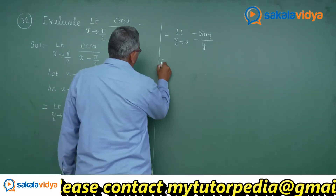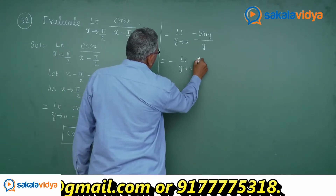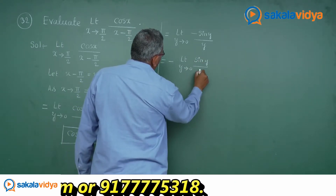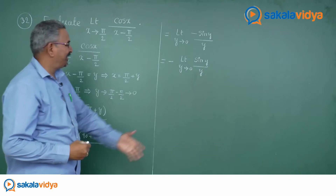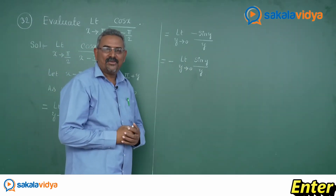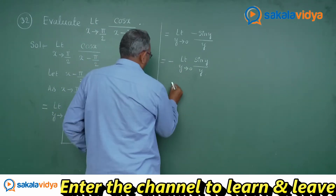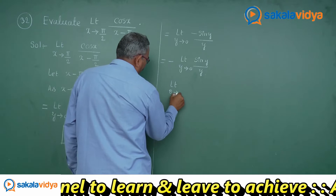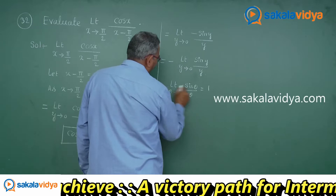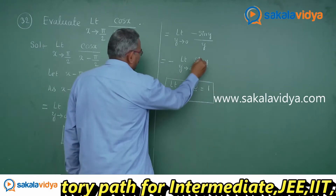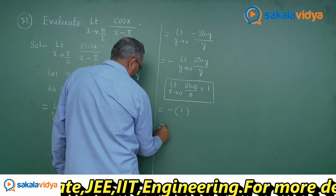So that gives us: minus times limit y tends to 0, sin y by y. The value of limit y tends to 0, sin y/y is in the form of limit θ tends to 0, sin θ/θ, whose value is 1. Using this result, this becomes minus of 1, which is minus 1.